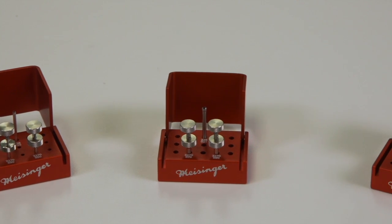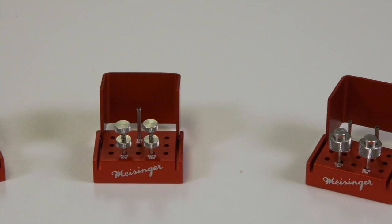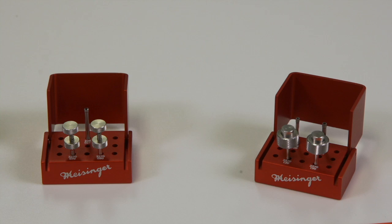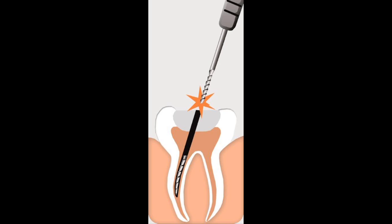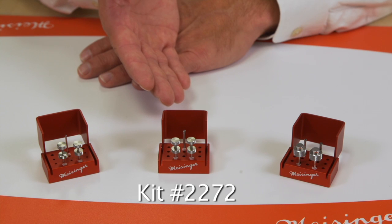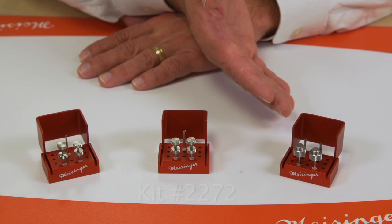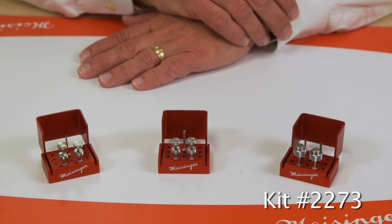Meisinger offers three systems for removal of broken or separated endodontic instruments. MyTrack 1 for removal of files up to size 15, MyTrack 2 for removal of files or obstructions up to size 30 including silver points, and MyTrack 3 for removal of broken endodontic posts.